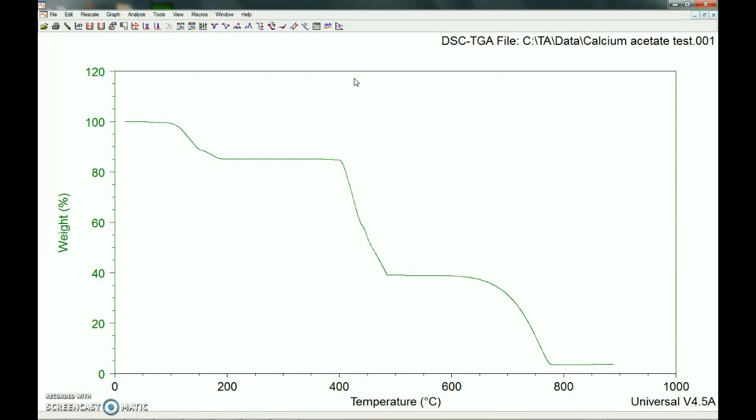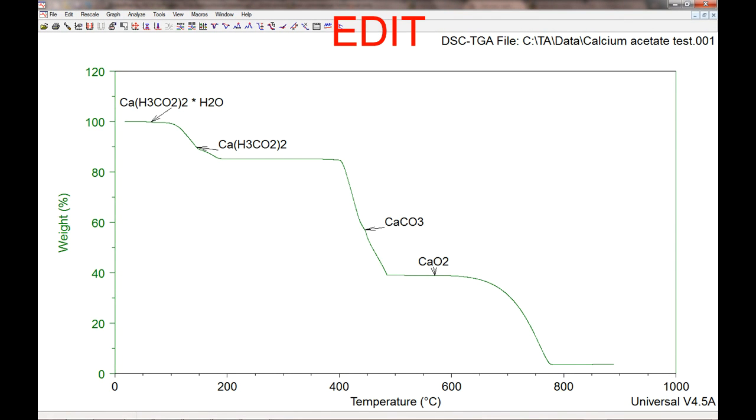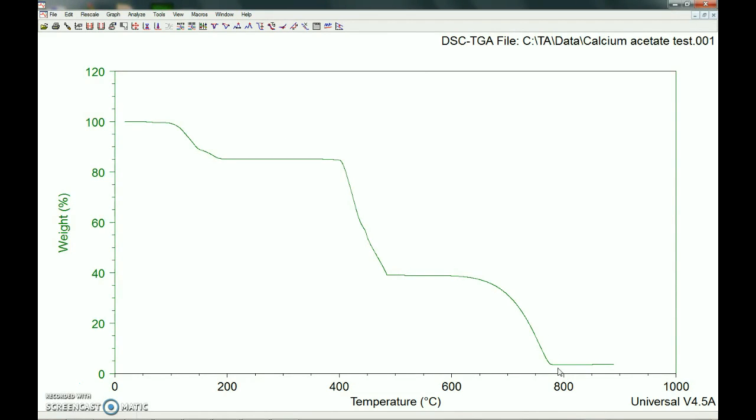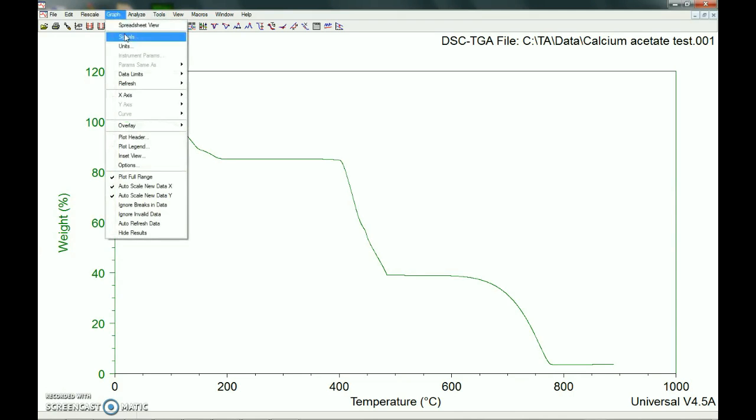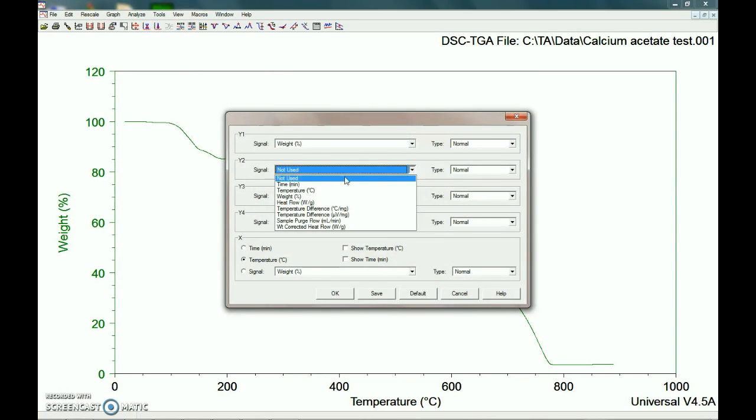We did calcium acetate. So most of the time in your sample, you'll have some water. This first ramp here is around 100 degrees Celsius, which is about the boiling point of water. So that weight percent lost there is just the water evaporating off. So it holds steady for a bit, and then we get to 400, and then it starts to decompose. So calcium acetate's first decomposition product is going to be calcium carbonate. Then it holds steady for a bit, and then it goes down to near zero.